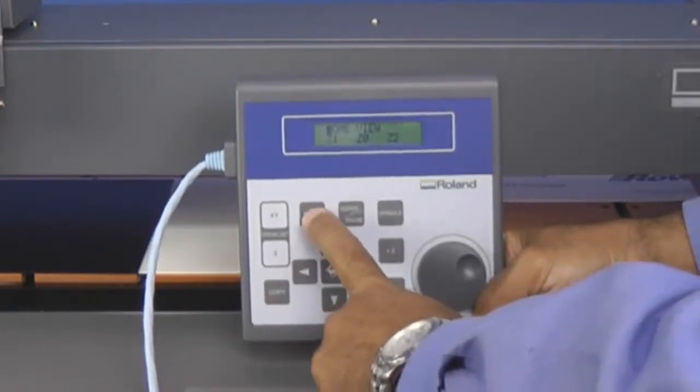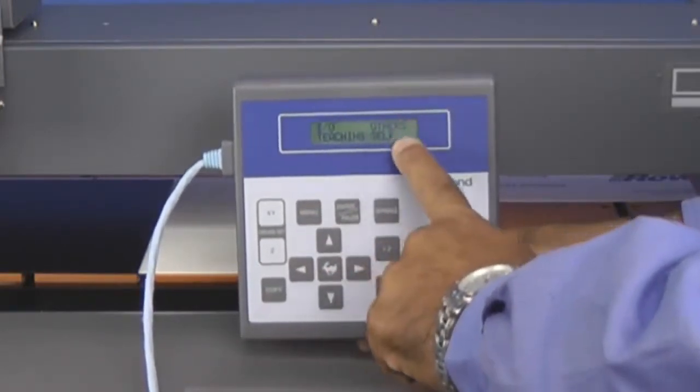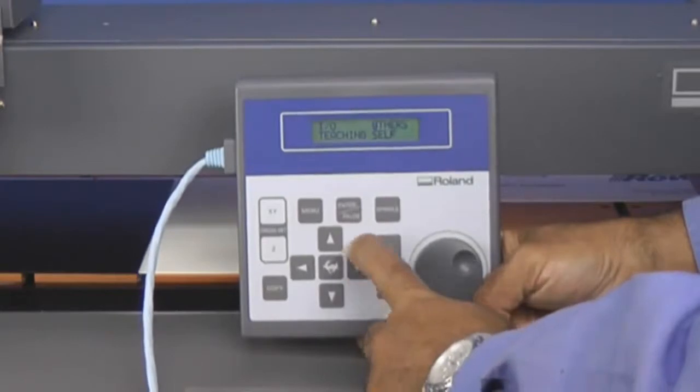Then you'll press your XY origin set button and press the Enter key to set that value. Once we're done, we'll press the menu key until we get to the I/O Others menu.